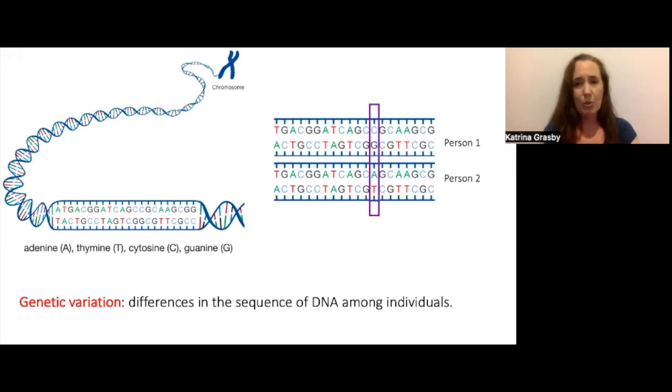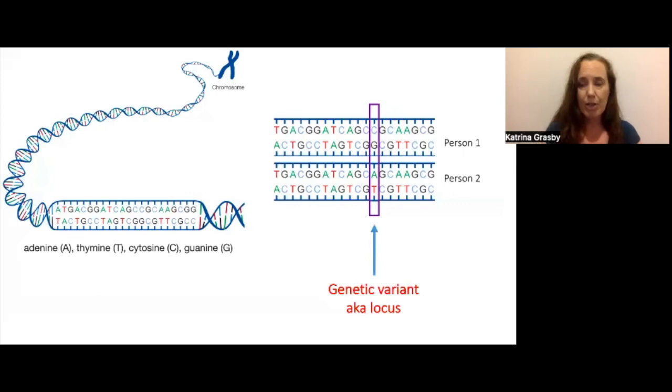But most of those are the same for all people. Only about 0.1% differ across individuals. So a genetic variant is going to be any specific region that can differ between genomes.